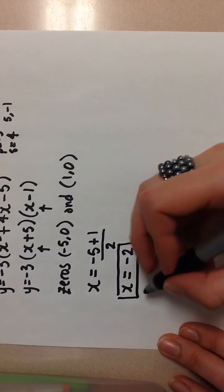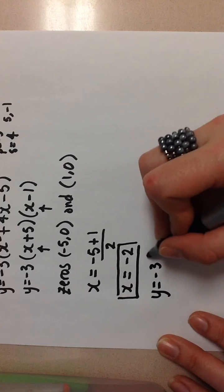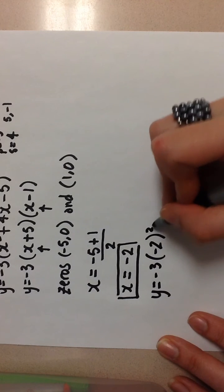So my original equation was y equals negative 3. I'm going to sub in my x value of negative 2 now.